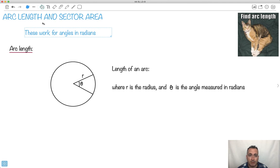Arc length and sector area. These are going to be things that are going to work for angles in radians. We've got some really nice little tricks for us, so long as we think in radians. So first thing is called an arc length.